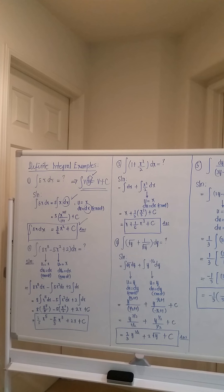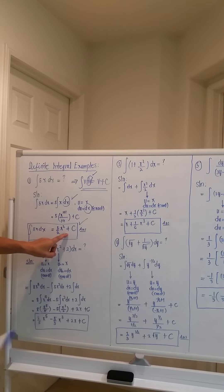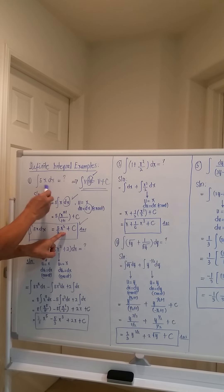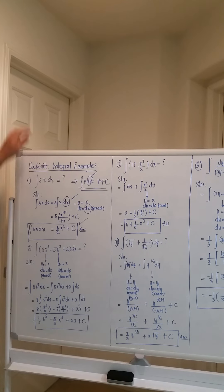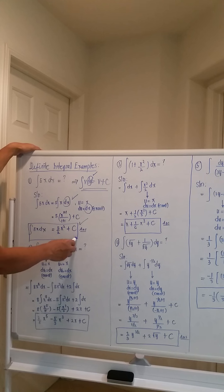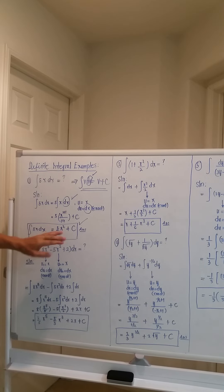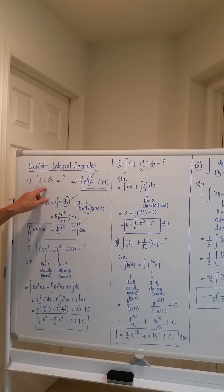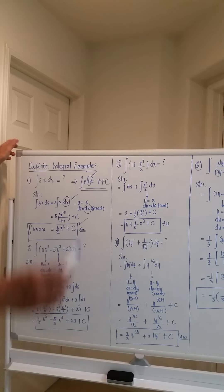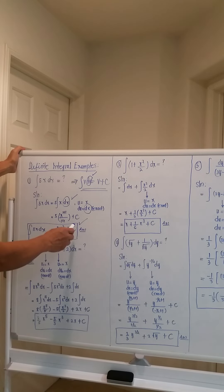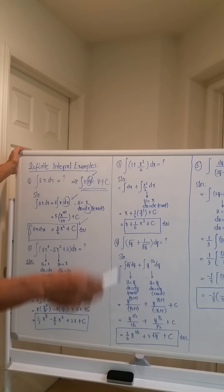If you want to verify the correctness of your answer, take the derivative. The derivative of 5/2 x² + C gives 5/2 times 2x dx, which becomes 5x dx plus zero — the same as the original equation. That's the answer. It's a simple problem, but you must verify the value of dv.